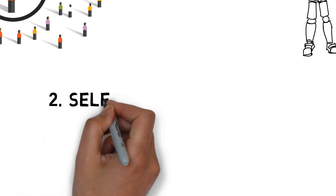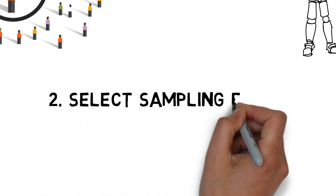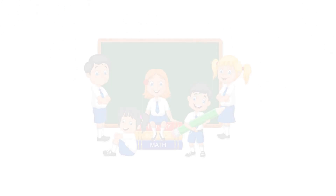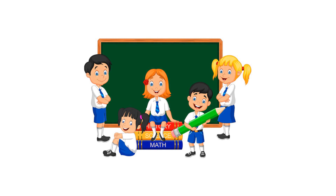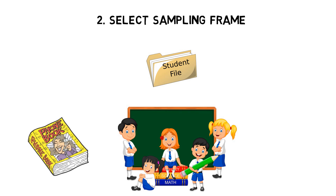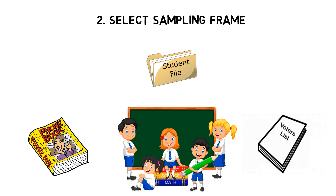The next step is selecting a sampling frame. It is basically a list of all the items or people forming a population from which a sample is taken. Think of it as a frame where you can just get your desired population data. For example, it can be a file which contains the list of all the students studying in a school, or a phone book which contains the contact details of persons residing in a particular city, or a list of all those people whose names appear on the voter list of a constituency.